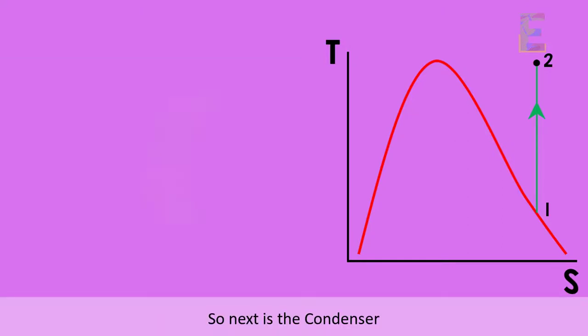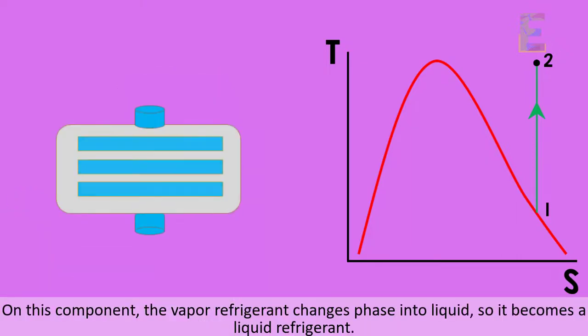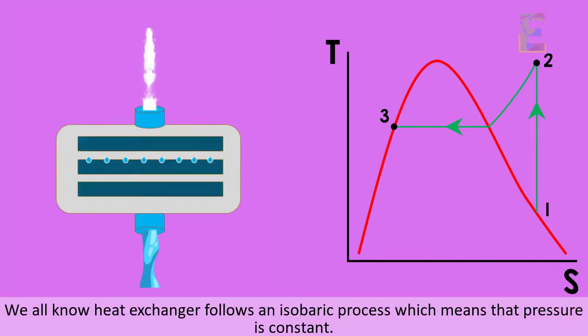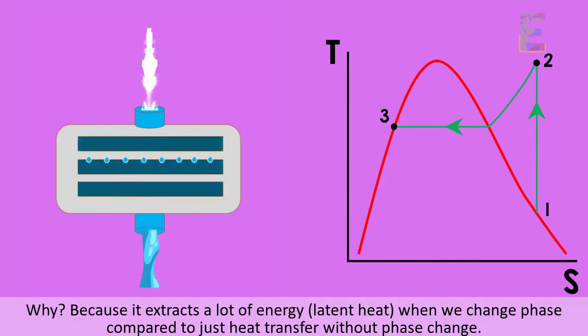So next is the condenser. On this component, the vapor refrigerant changes phase into liquid. So it becomes a liquid refrigerant. Its temperature decreases, but the pressure remains the same since this is a heat exchanger. We all know heat exchanger follows an isobaric process, which means that pressure is constant. The main purpose for this component is through condensation, we remove a larger amount of heat from the refrigerant. Why? Because it extracts a lot of energy or latent heat when we change phase compared to just heat transfer without phase change.